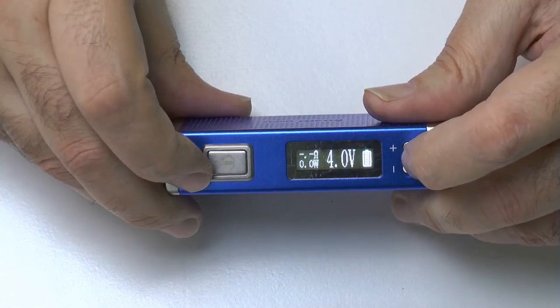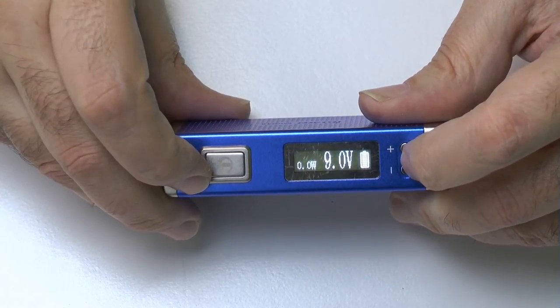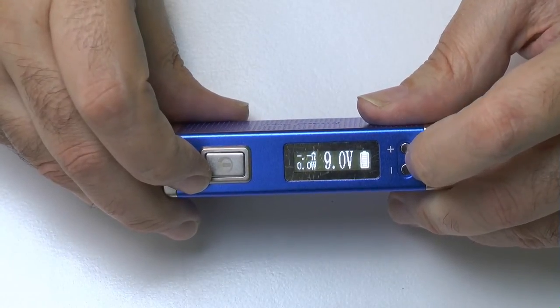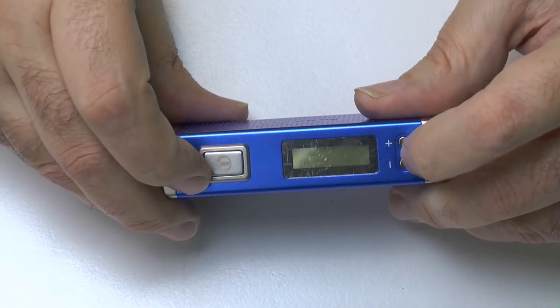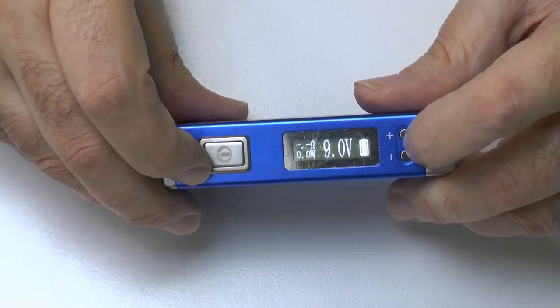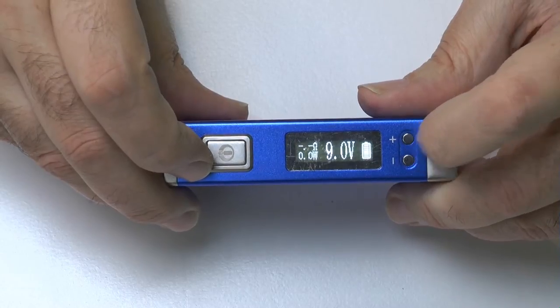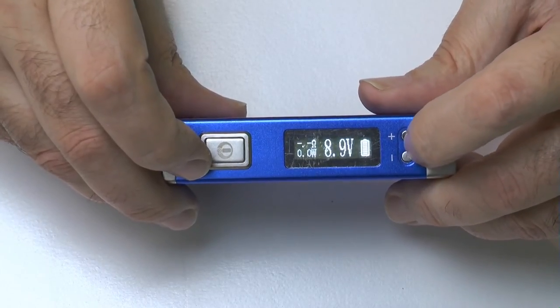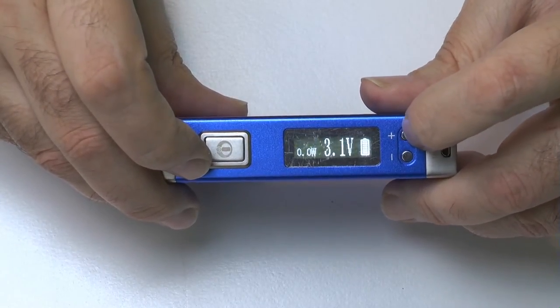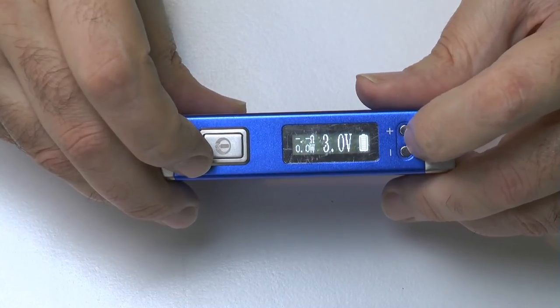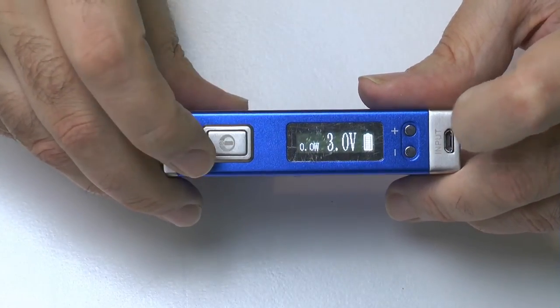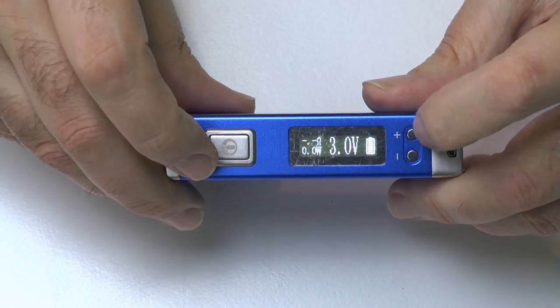It goes from three volts to nine volts or from nine volts to three volts and it cycles through, so it's not a case of you having to go up and all the way down again. You can just go all the way through from nine to three. If we then press the fire button that locks that in place.